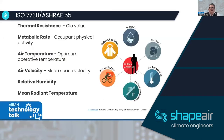ISO 7730 and ASHRAE 55 are very similar or essentially the same. They are an amalgam of six elements: the thermal resistance (CLO value), the metabolic rate, the physical activity, the air temperature or operative temperature, the air velocity and mean space velocity, and the relative humidity and mean radiant temperature.